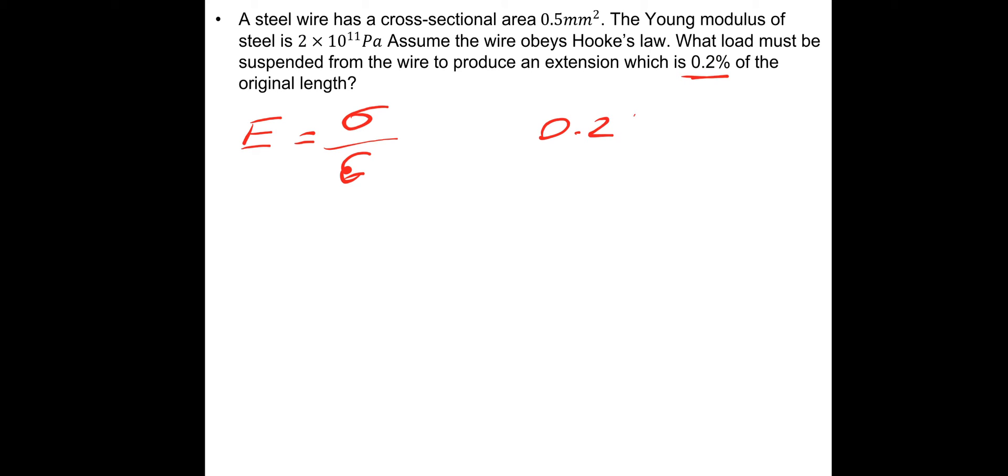Is 0.2%. So 0.2% we need to divide that by 100, and that will give us the strain, which is 2 times 10 to the minus 3.